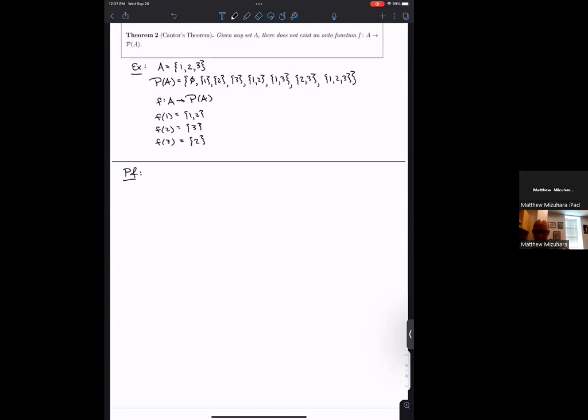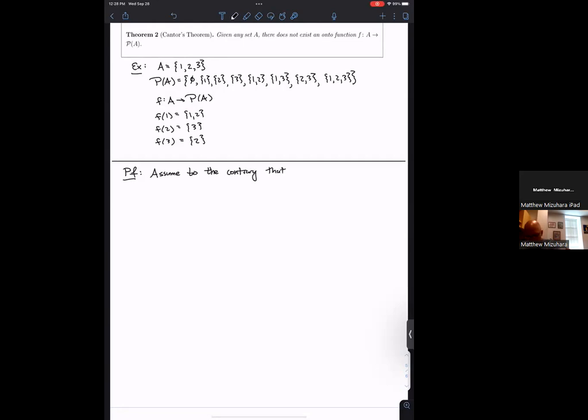Let's start going through the proof of this theorem and we'll bounce back to the example when we need to help with our intuition. But as usual, to show something does not exist, let's assume to the contrary that there is such an onto function and then see where it goes wrong. So assume to the contrary that there exists an onto function f from A to its power set.